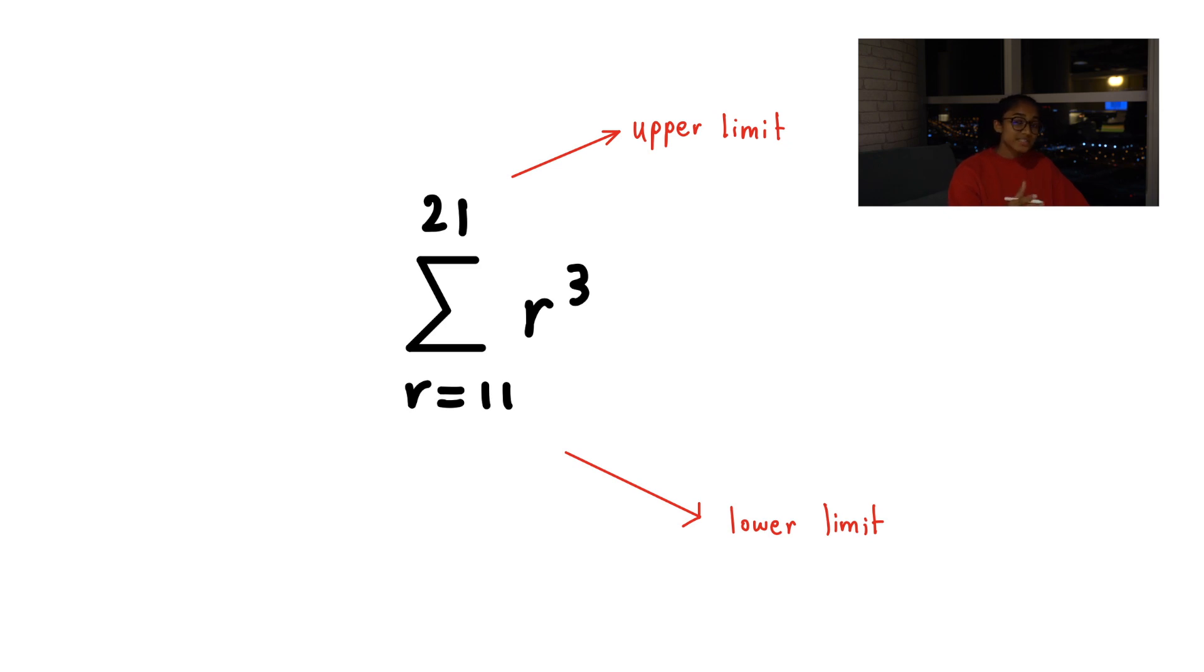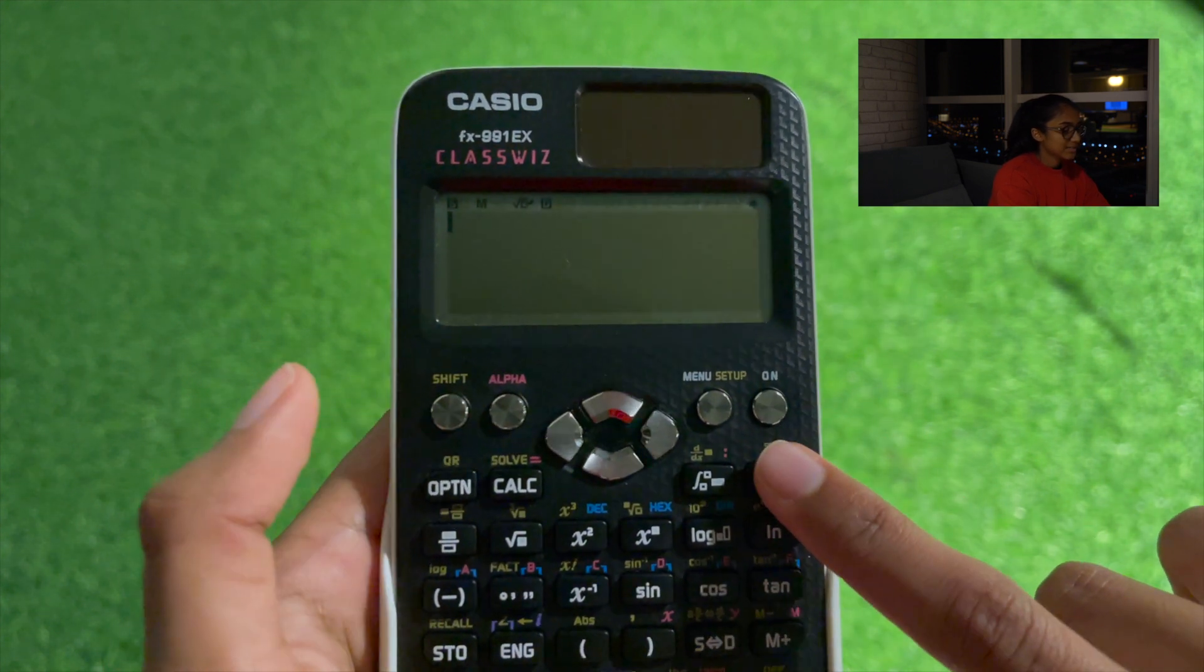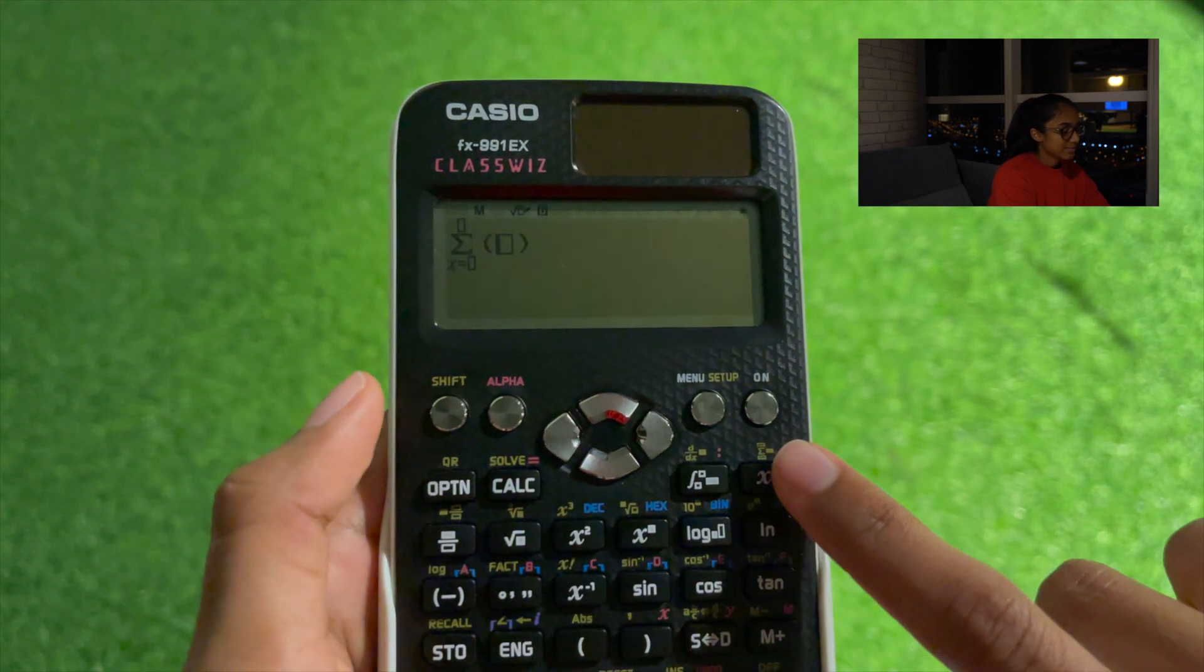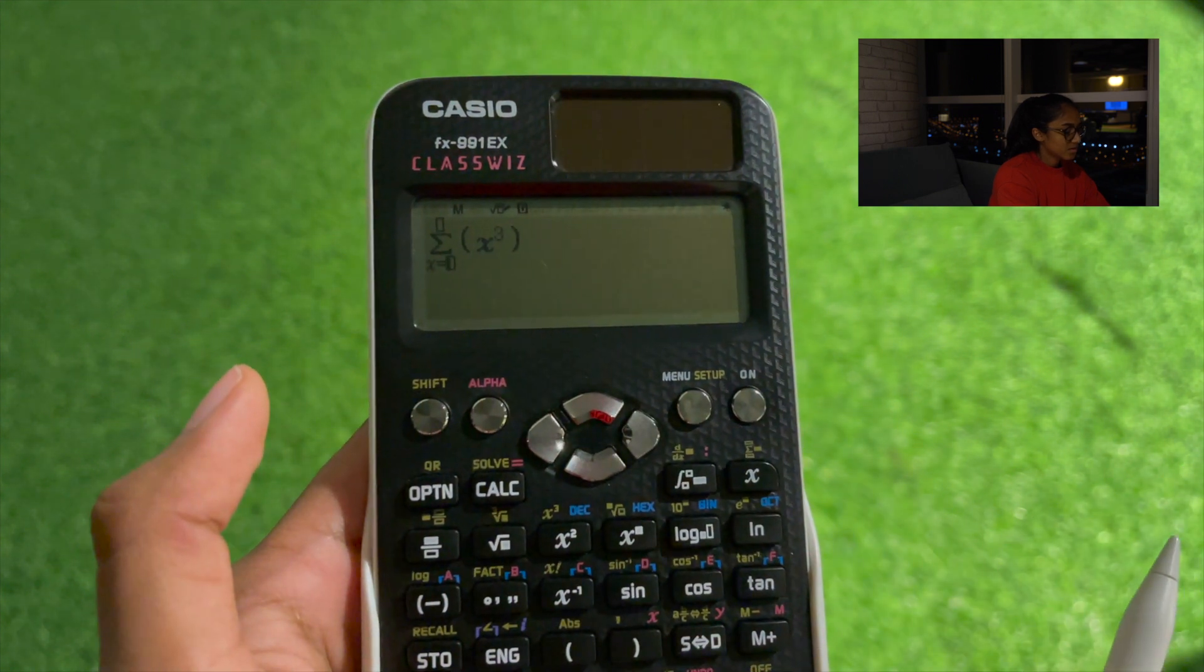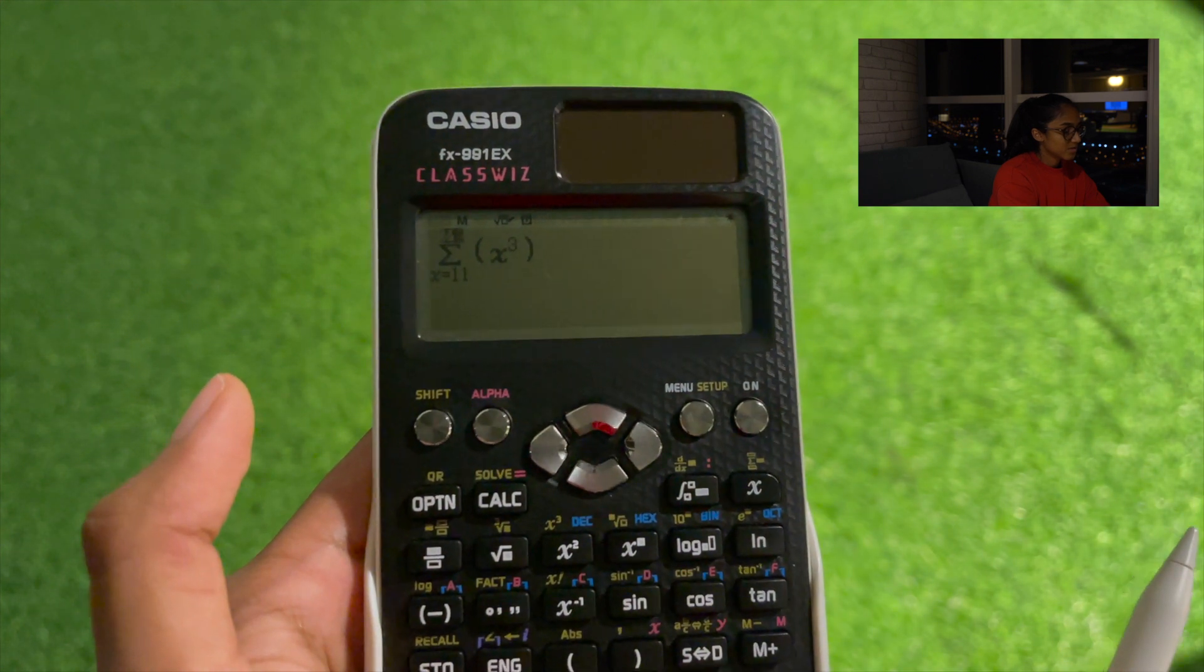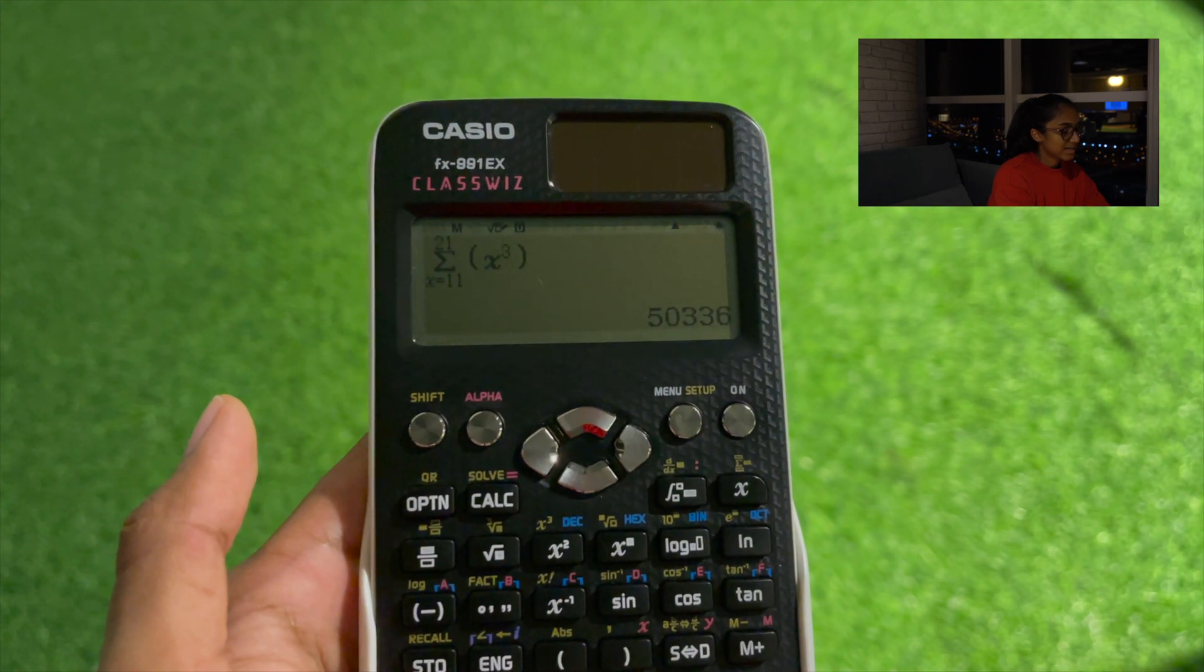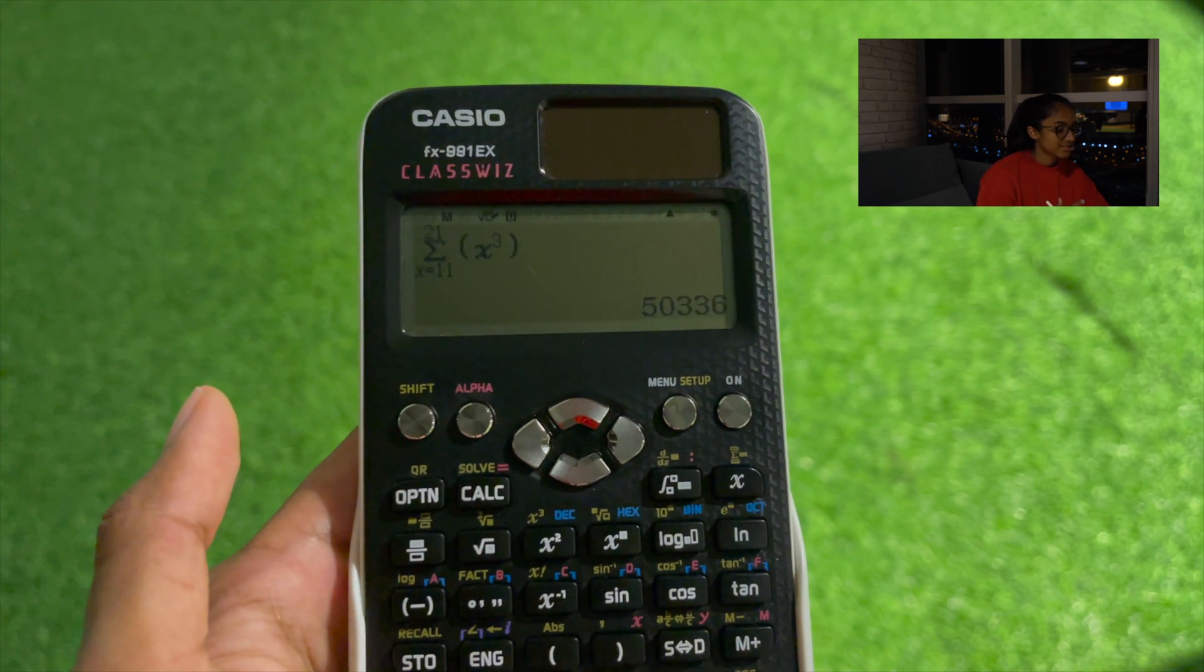So we also need to notice that the function is R cubed. So we represent that on the calculator as X cubed, as you'll see now. So let's get our sigma notation. We type in X cubed. Our lower limit is 11, and our upper limit is 21. We press the equal sign to get our result, 50,336.